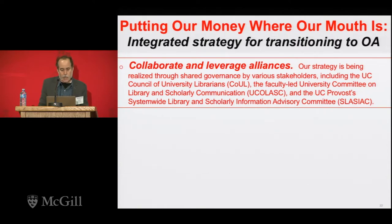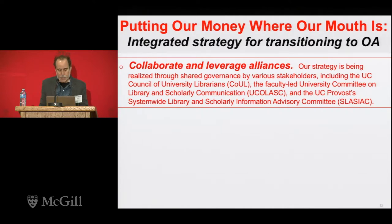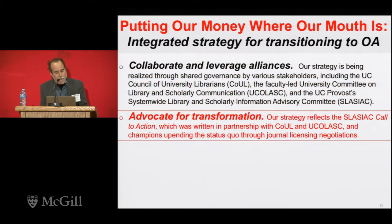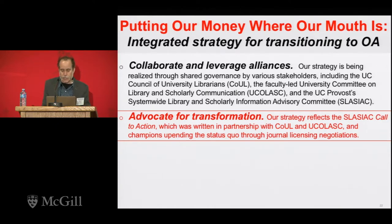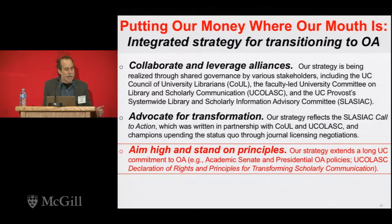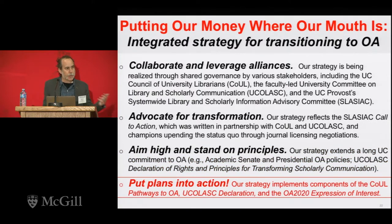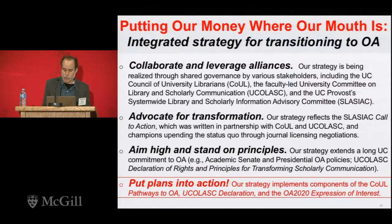This is our integrated strategy for transitioning to open access: collaborate and leverage alliances. It's being realized in the UC system through stakeholders including the Council of University Librarians, the Faculty-Led Committee on Library and Scholarly Communication, and the Provost System-wide Library and Scholarly Information Advisory Committee. The other strategy is to advocate for transformation — our strategy reflects a call to action written in partnership with these bodies, championing upending the status quo through journal licensing negotiations. We intend to aim high, stand on our principles, and put our plans into action. We are currently undertaking negotiations with commercial publishers and initiating pilots to implement these plans.